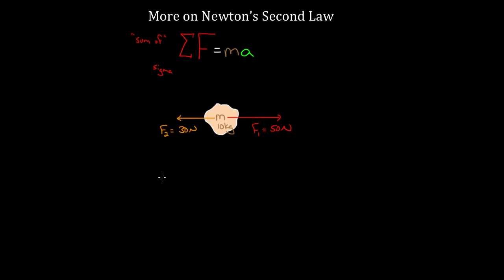So in this case, we take 50 Newtons — because it goes to the right, and we choose rightward as positive and upward as positive — so 50 is positive. We add up the forces like vectors, because forces are vectors and this is a vector equation. We can't just take 50 plus 30. Vectors pointing left are negative, vectors pointing right are positive. So we take 50 Newtons minus 30 Newtons, equal to mass times acceleration. Plugging in 10 kilograms gives us 20 over 10, which is two meters per second squared. You have to add these up like vectors.